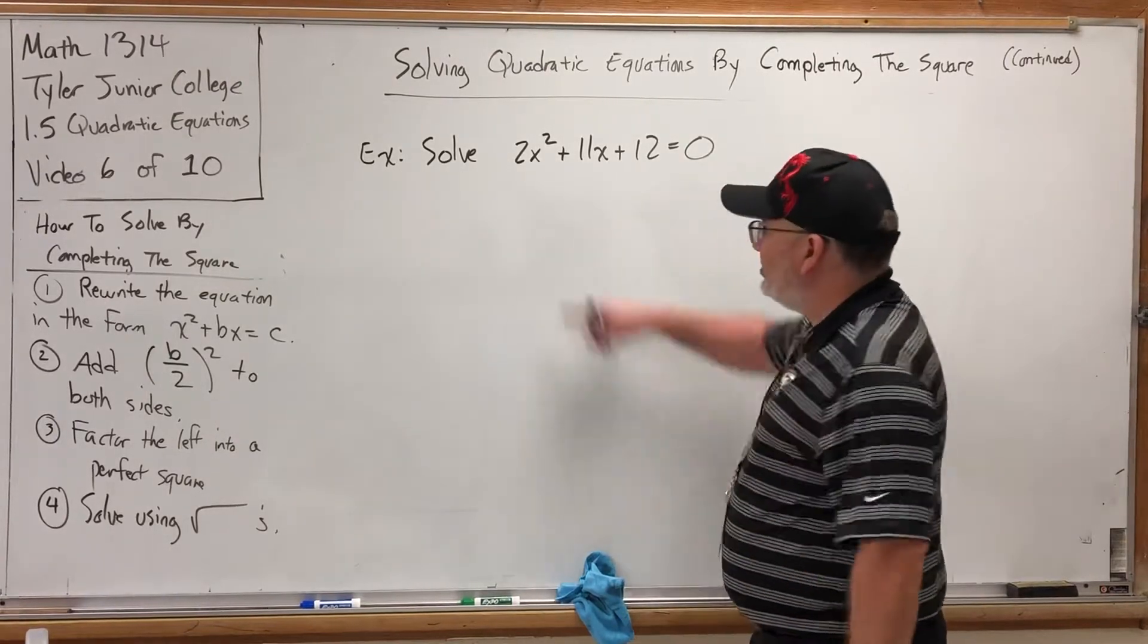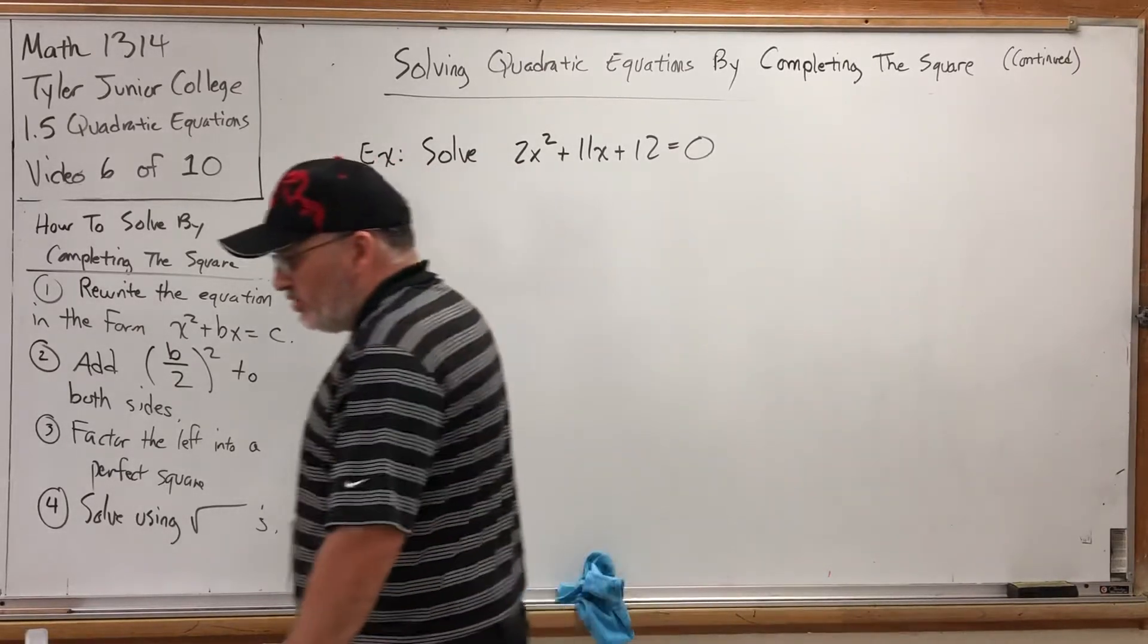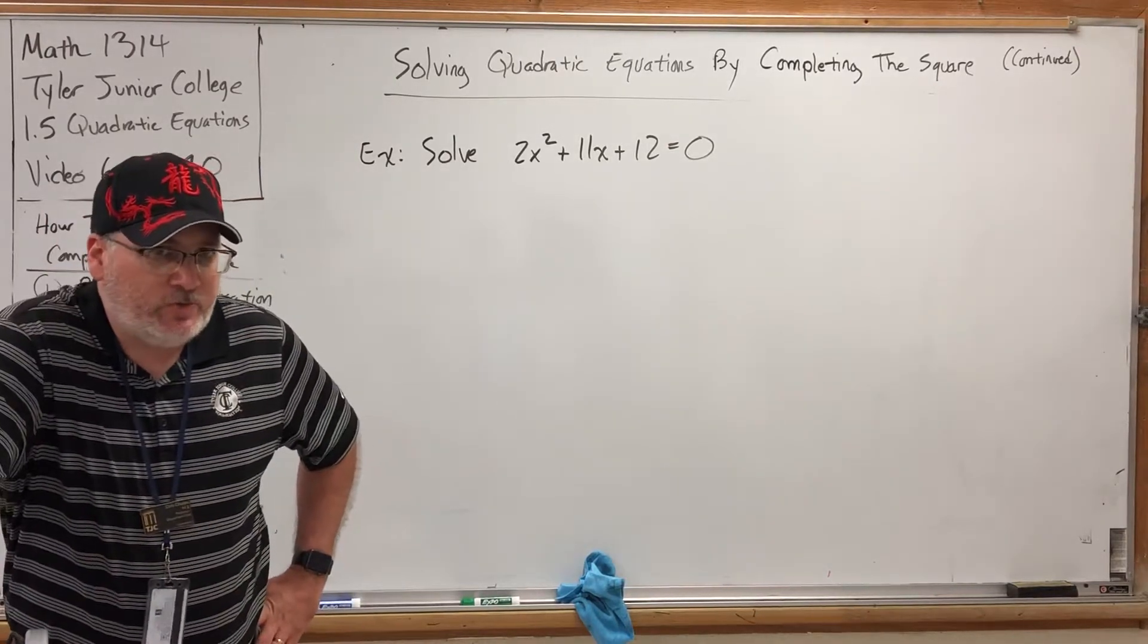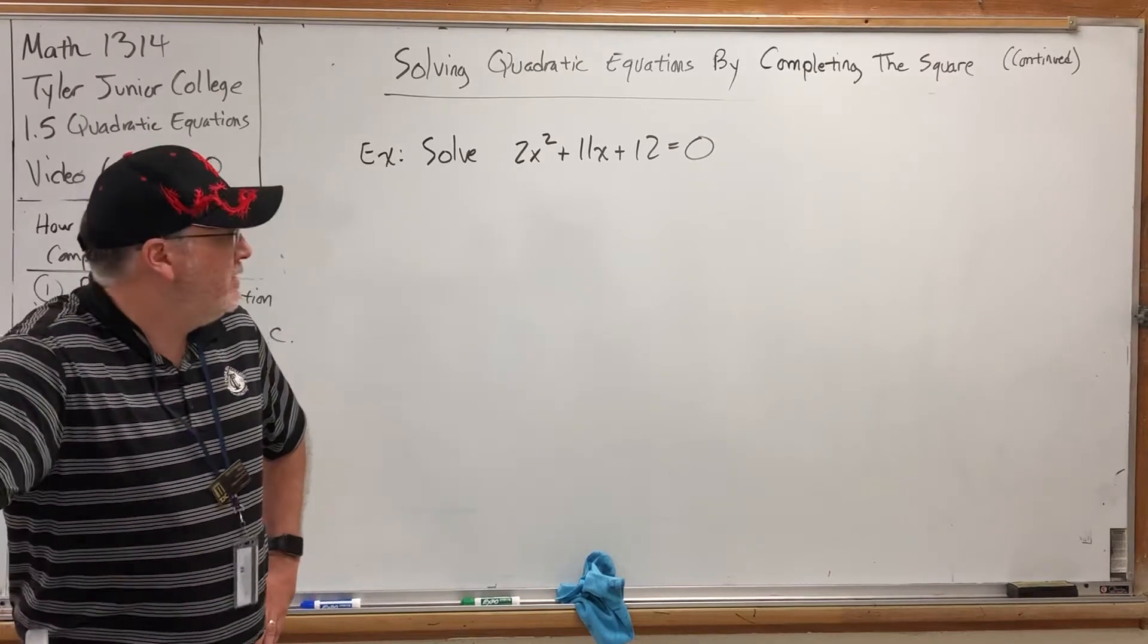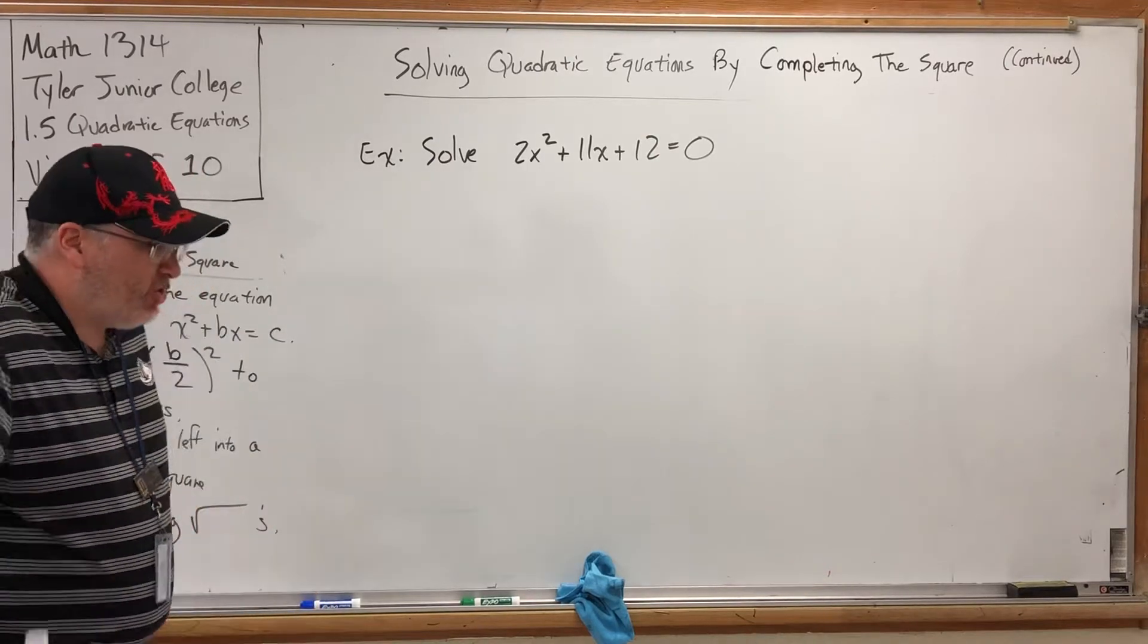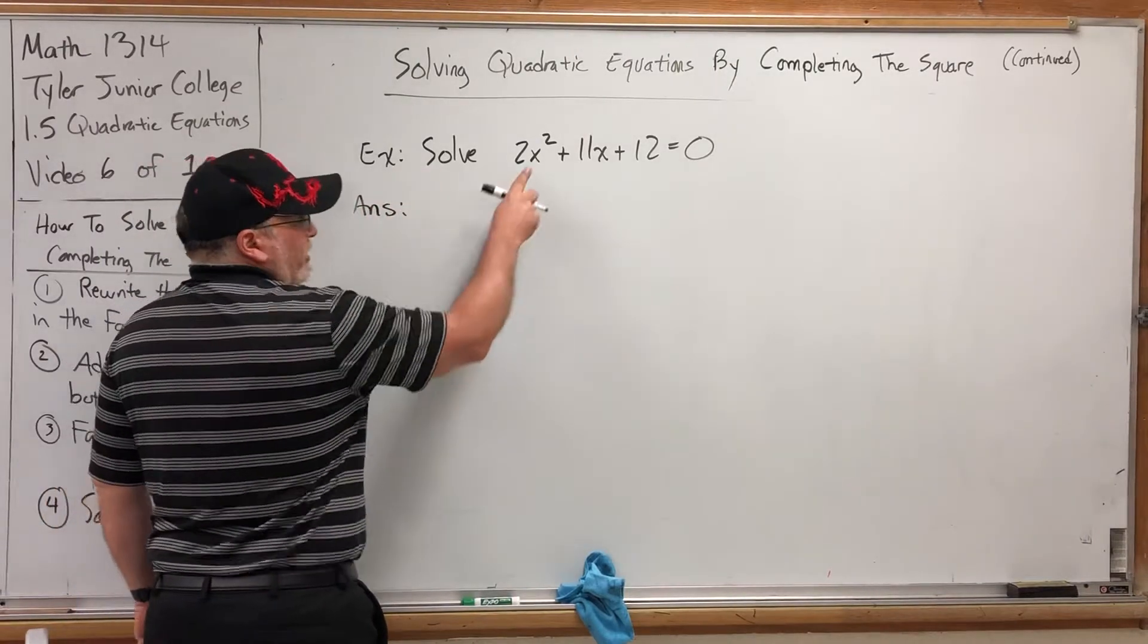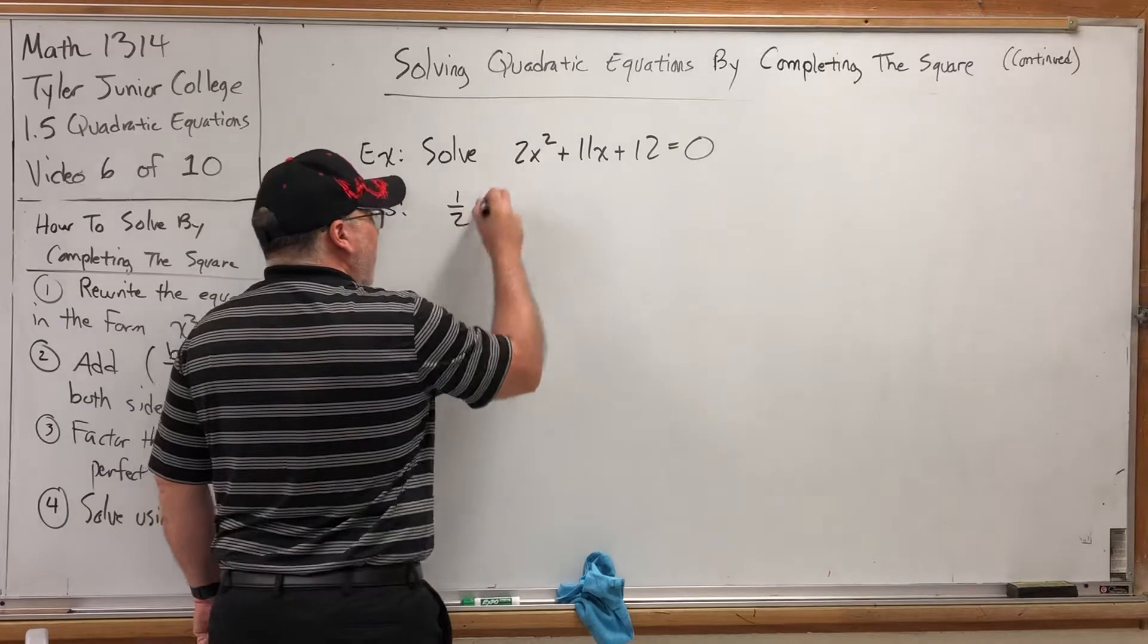I can't do this as long as this 2 is here. So I have to make the 2 disappear. How do you get rid of a 2 that's multiplied? Answer, divide. Well, there's actually two ways to think about it. I can divide everything by 2, or I can multiply everything by 1 half. I'm going to choose the latter. So first, in order to get the x squared to be just an x squared, I'm going to multiply both sides by 1 half.